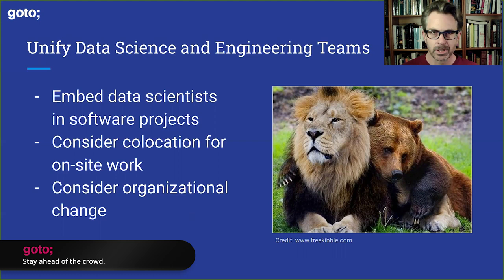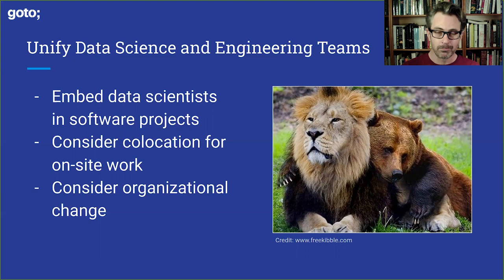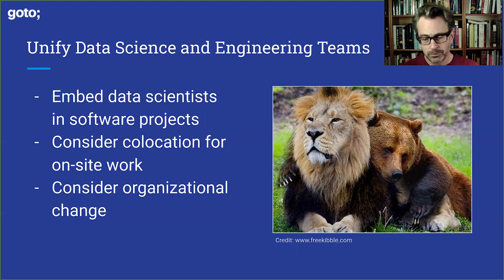Data scientists need to be embedded in their software team and be a part of that team. When we can return to onsite environments, I would consider co-locating — not just down the hall or in a different building, but actually in the same physical space as the software team. And then the third approach, which I think is big, is organizational change where the two functions are actually reporting up the same organizational structure.